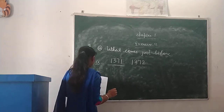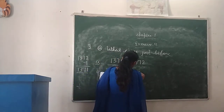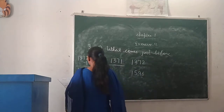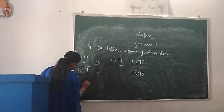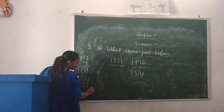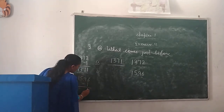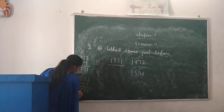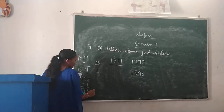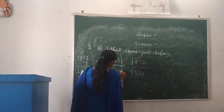Next, Part B: 1,596. We will subtract 1. 6 minus 1 is 5. 9 stays 9. 5 stays 5. 1 stays 1. So the number is 1,595.